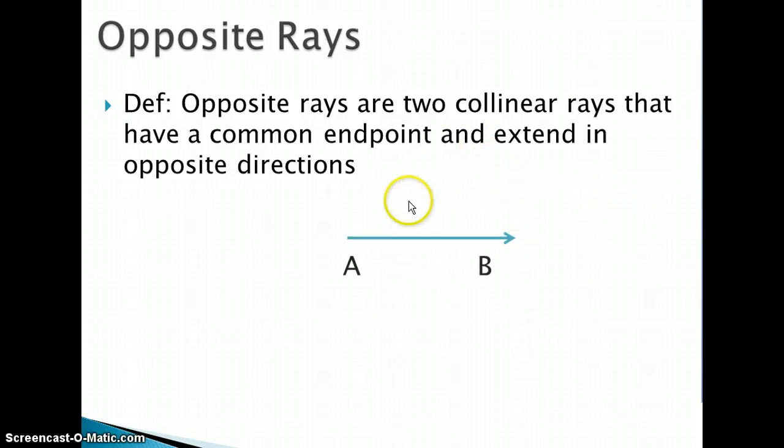So as a diagram here, this is one of our rays. We have ray AB, so it starts at A and goes towards B. If we want to make an opposite ray, we have to start at A and go in the opposite direction of B. So we get this angle here, ray AC, which is a straight line, so AB and AC are referred to as opposite rays.